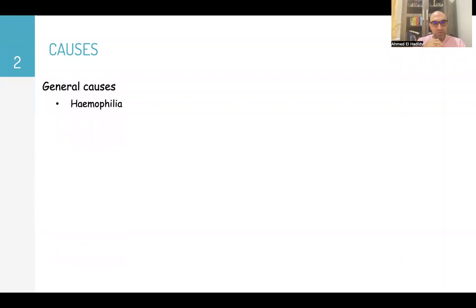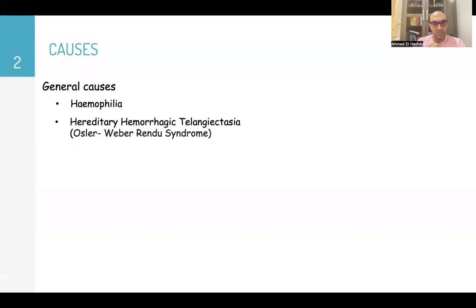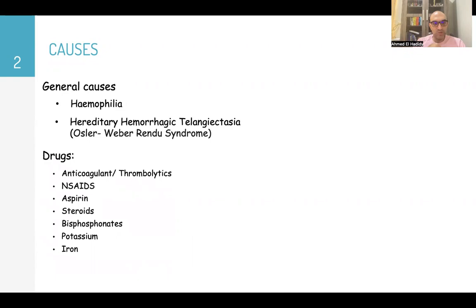There are a lot of causes for hematemesis. Let's start with general causes like hemophilia or hereditary hemorrhagic telangiectasia, and many drugs like anticoagulants or thrombolytics, non-steroidal anti-inflammatory drugs, aspirin, steroids, bisphosphonates, potassium, and iron.